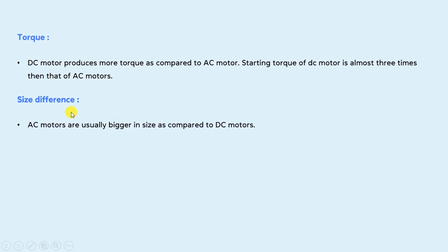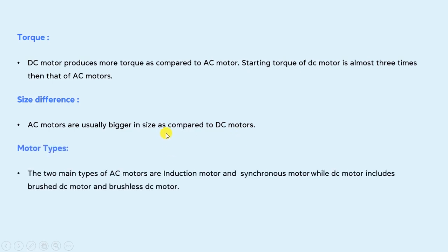Size difference: AC motors are usually bigger in size as compared to DC motors. Motor types: the two main types of AC motors are induction motor and synchronous motor, while DC motors include brushed DC motor and brushless DC motor.